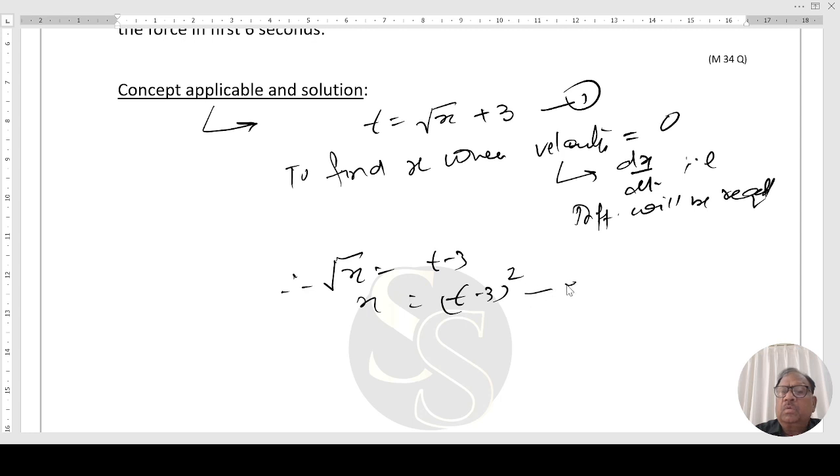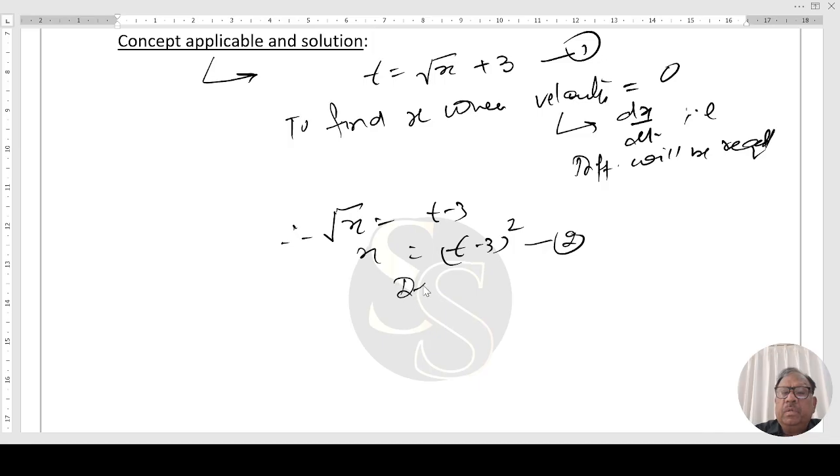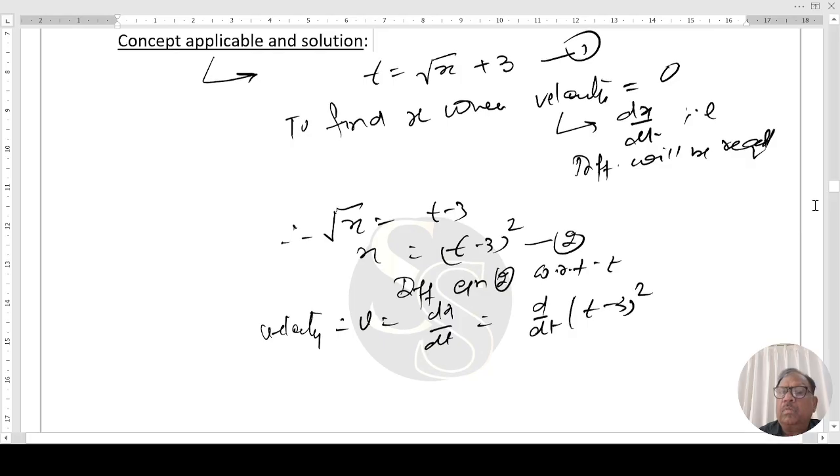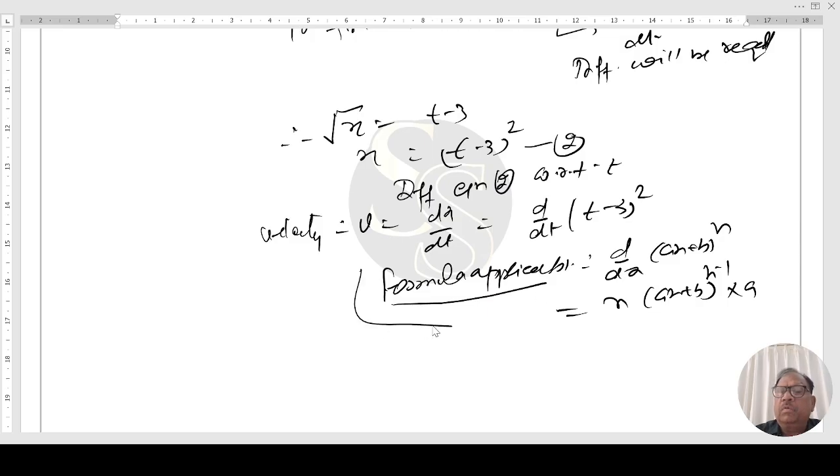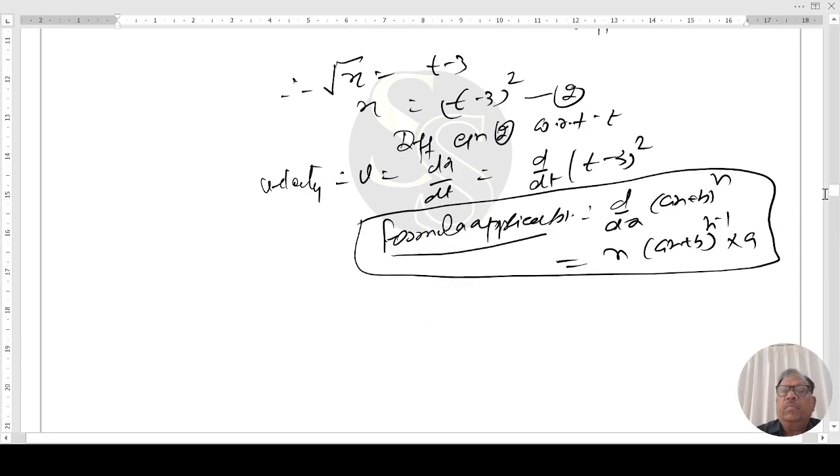Therefore x will be equal to t minus 3 whole square. This is equation 2. Differentiating equation 2 with respect to t, velocity v will be equal to dx/dt, that is differentiation of t minus 3 whole square. Using the formula d/dx of x plus a to the power n, that is n times x plus a to the power n minus 1. Therefore this comes out to be twice t minus 3 into 1, that is twice t minus 3. This is the velocity.